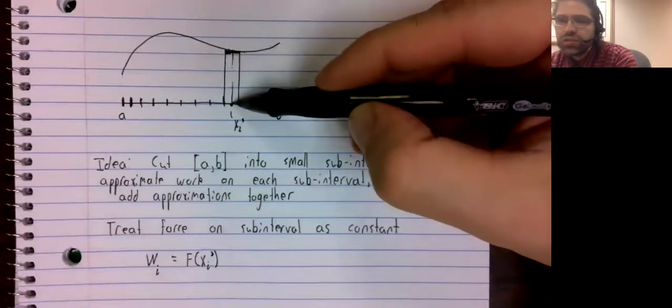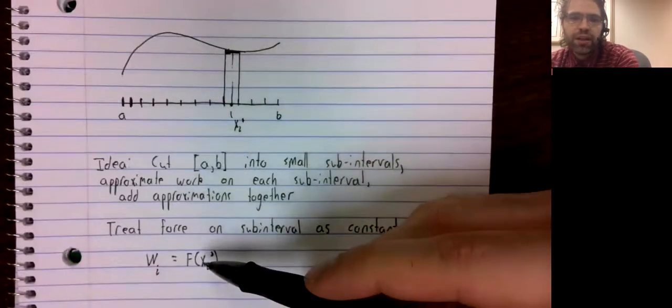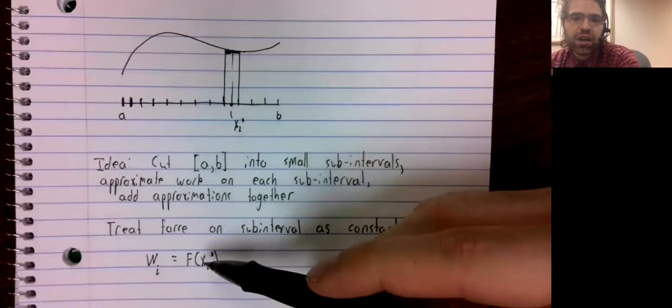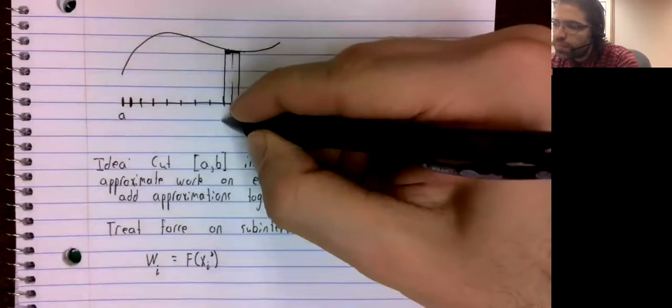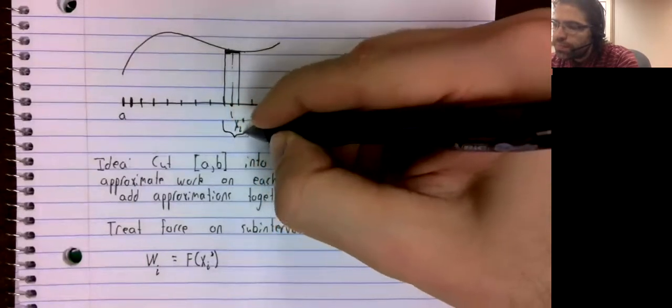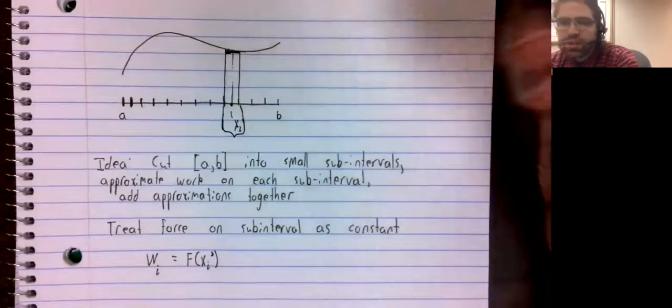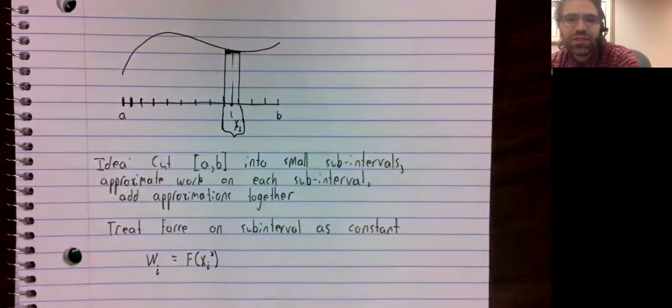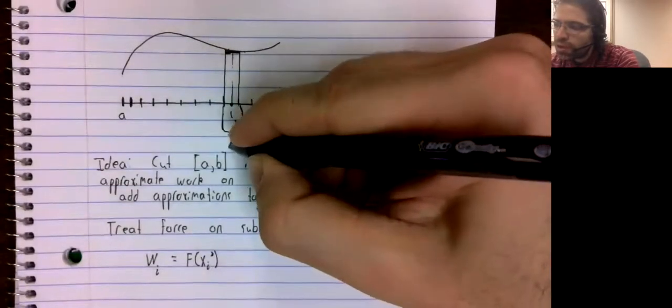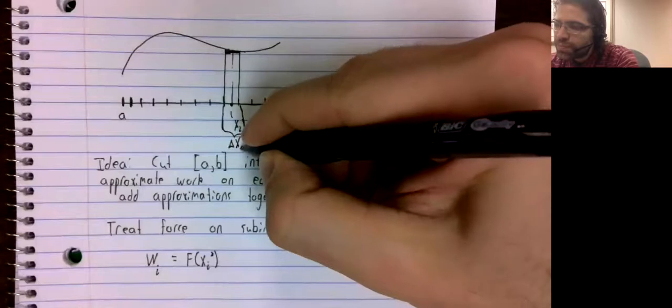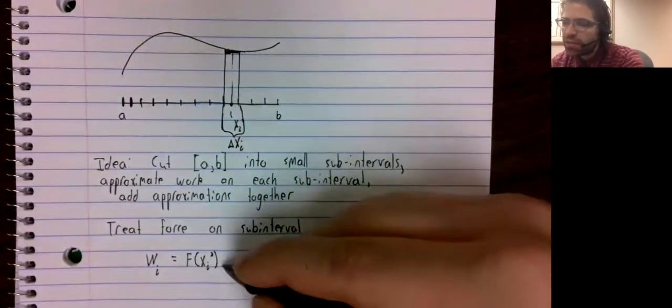The distance from the base to the top of the rectangle, that's f of x sub i. The distance is that distance. I didn't leave myself much room to work, but we'll call it delta x sub i.